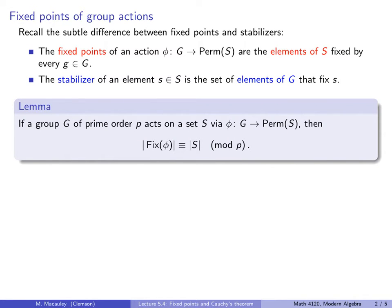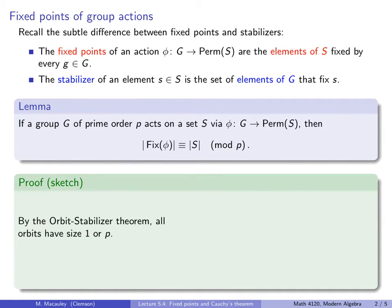Here's a lemma. Let's suppose a group of prime order p acts on a set S, and here's the homomorphism. Then the number of fixed points of the action is congruent to the size of the set modulo p. I'm only going to sketch the proof because once I draw the right picture it'll be obvious, and I'll let you fill in the details.